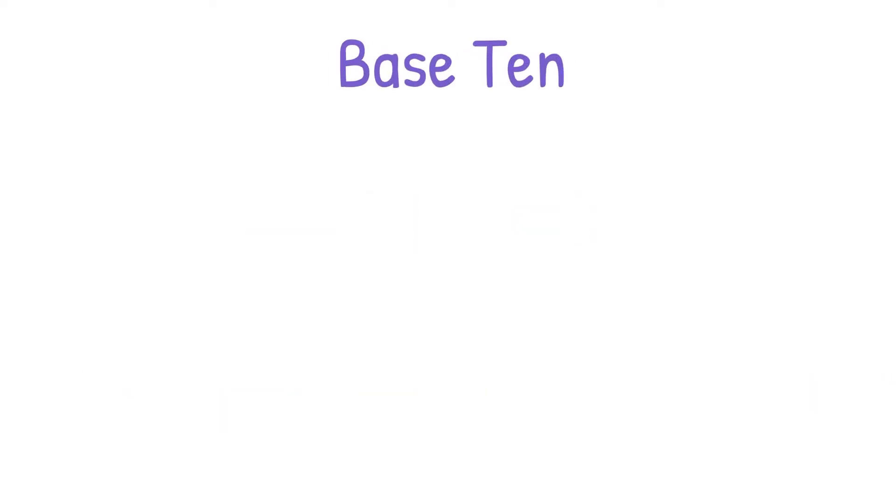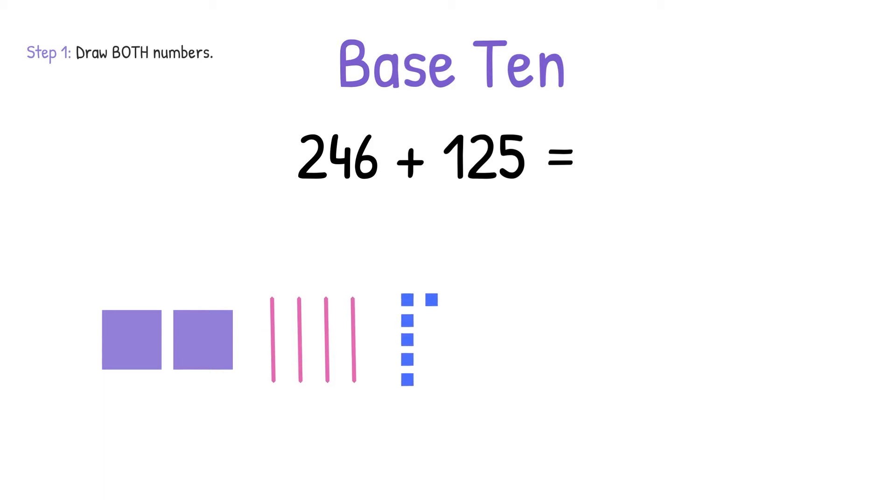Let's start with Base 10. We're going to solve 246 plus 125. Step 1 is draw both numbers. So we're going to draw 246 with 200s, 4 tens, and 6 ones.